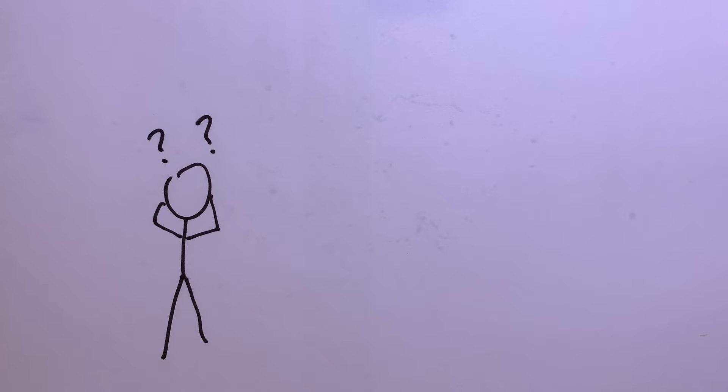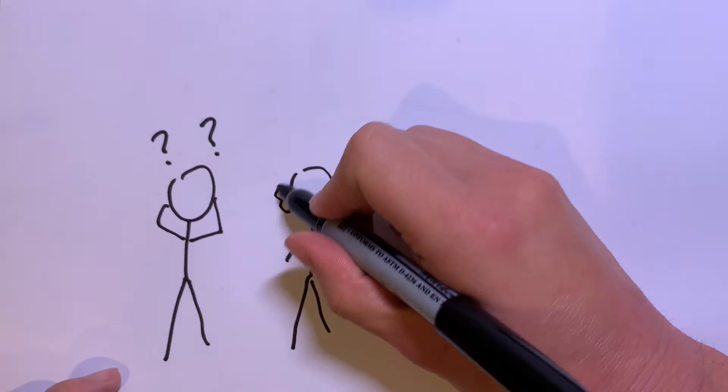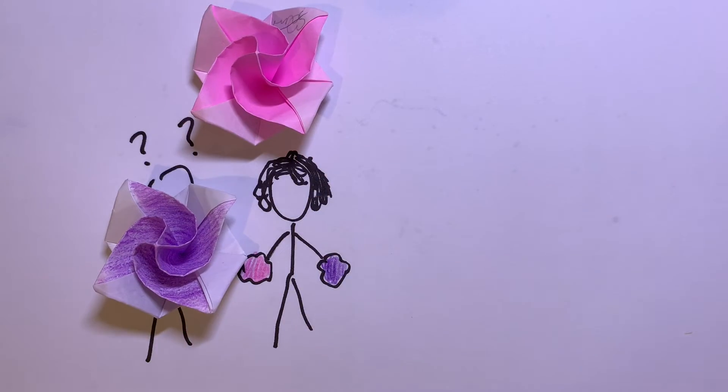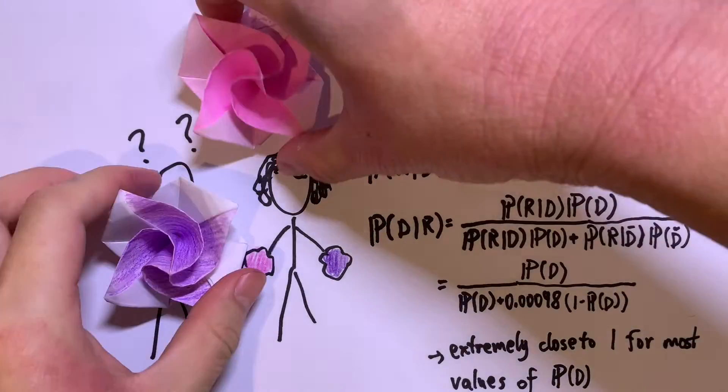This might seem impossible. However, there is a clever trick. What you do is give the two flowers to Anakin, then let him put them behind his back and possibly switch them. Then, he shows them to you again, and you tell him whether he switched the two flowers behind his back. If the two flowers are different colors, you can always answer correctly.